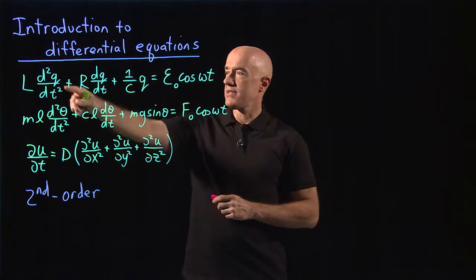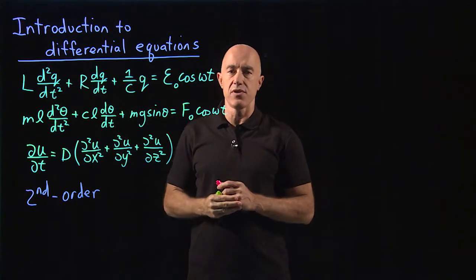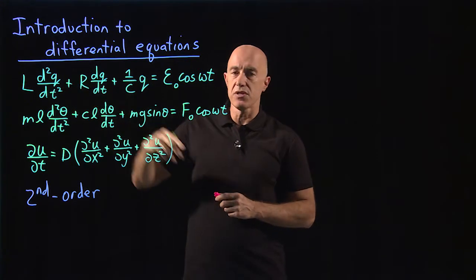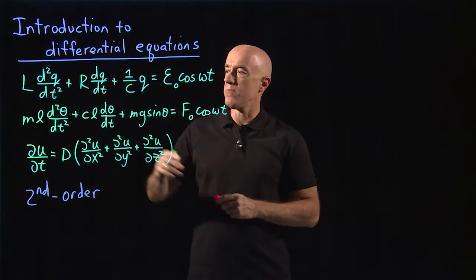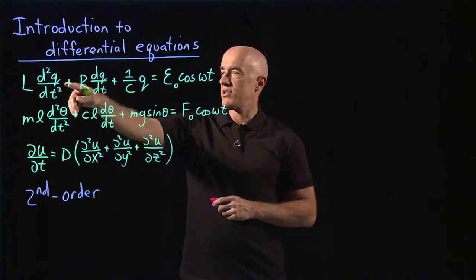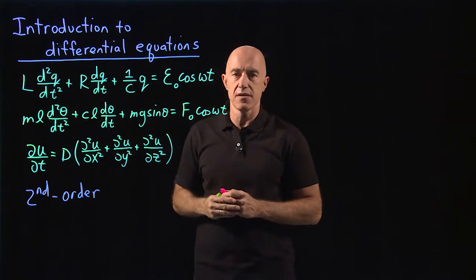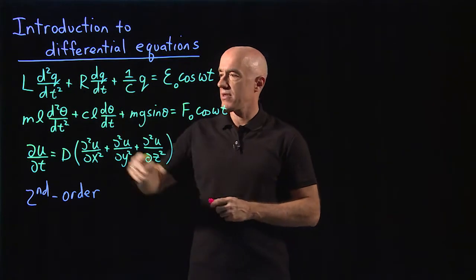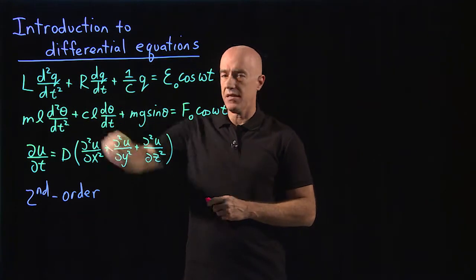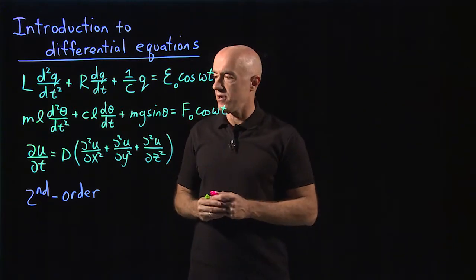You also notice that the first two equations just have an ordinary derivative in them, because there is only one independent variable, which here is t. So q is just a function of t — q is the charge on the capacitor in the circuit. Theta is just a function of t — theta is the angle that the pendulum makes with the vertical.